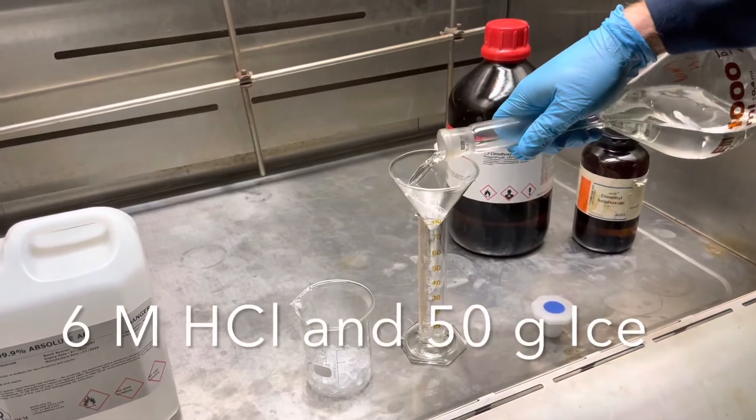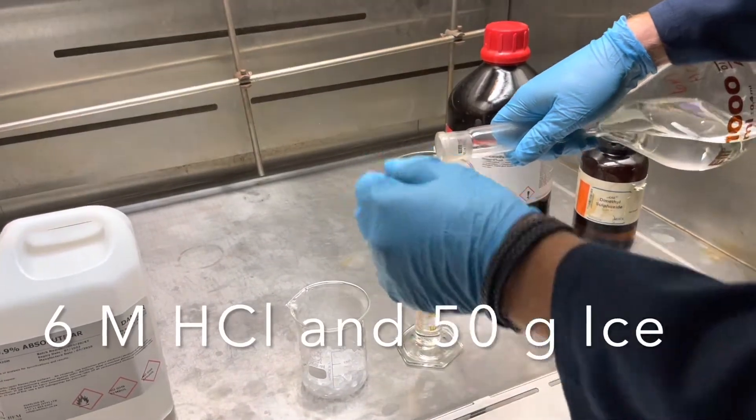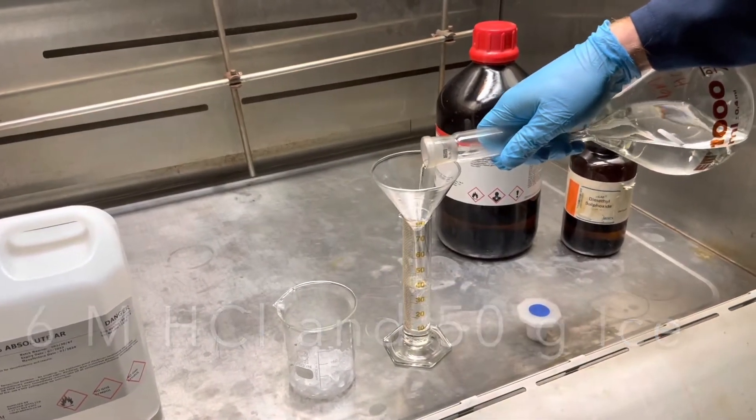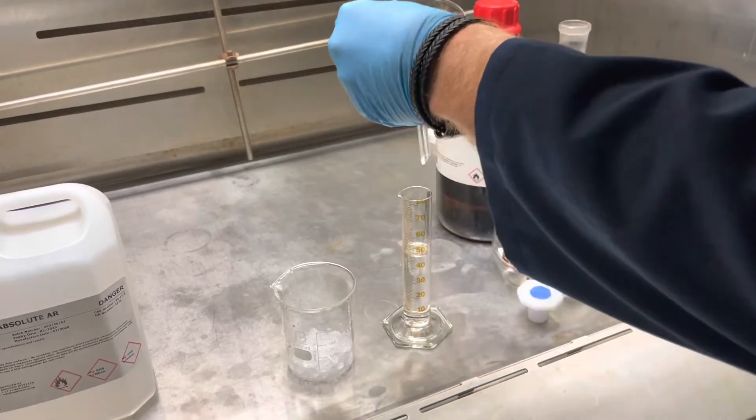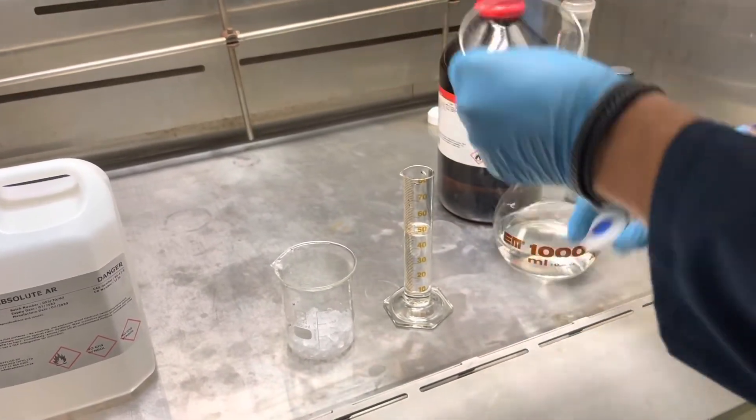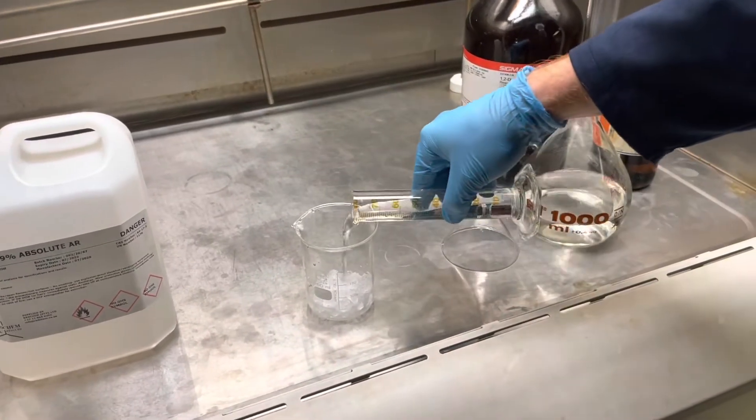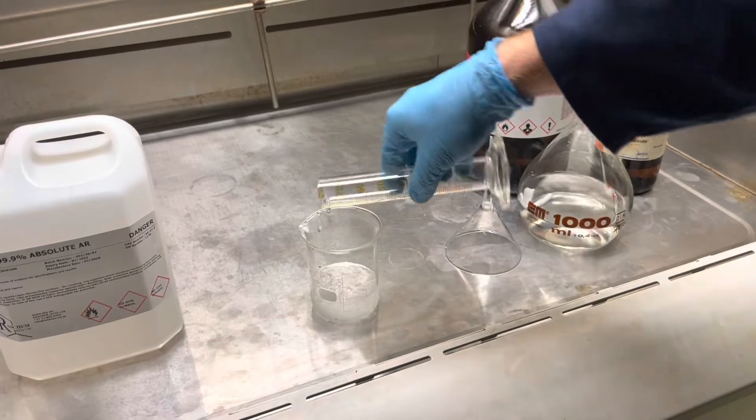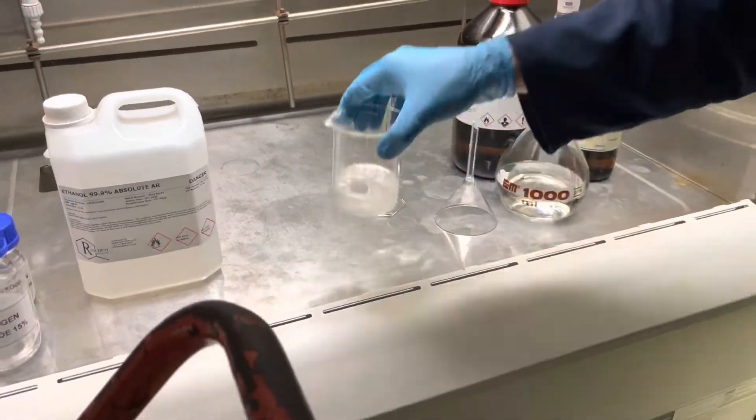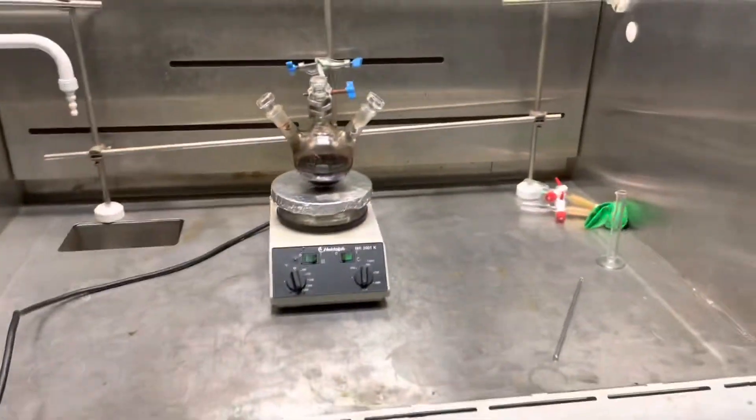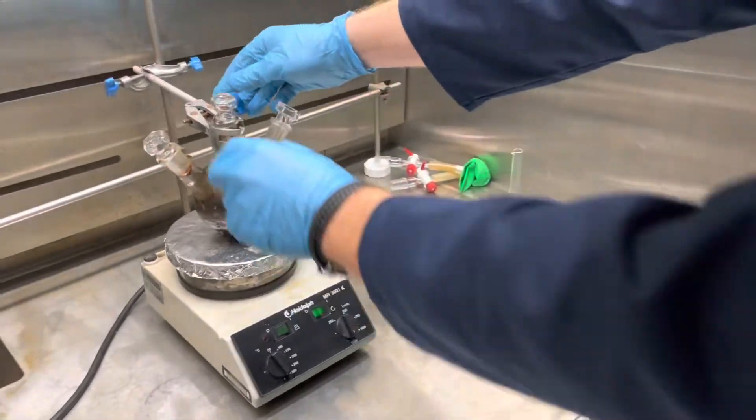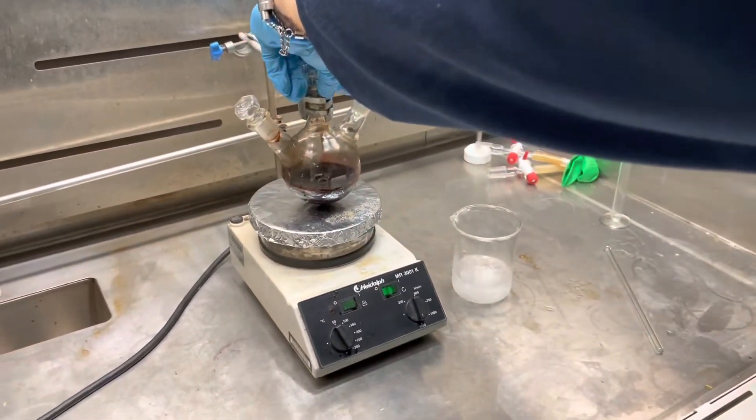Collect your 6 molar HCl as well as your 50 gram ice. Remember 50 gram ice is a relative amount. About 50 milliliter in a 100 milliliter beaker would be a good indication. Add the two together since you will add the constituents of your three-neck flask in this beaker to stir further. So it needs to be quite a large volume beaker.